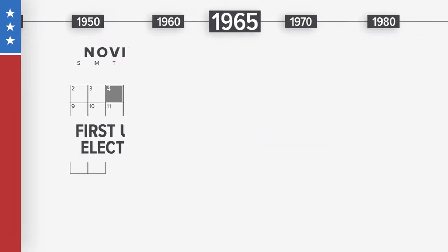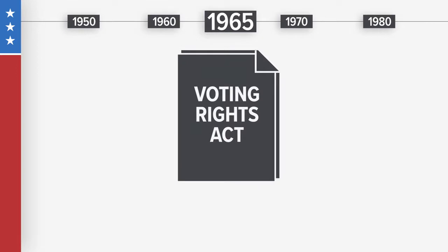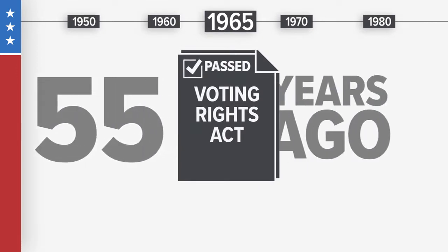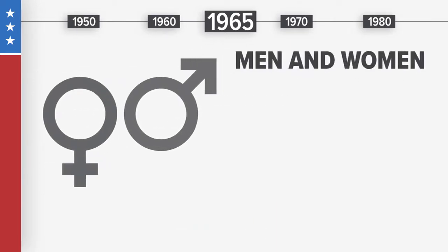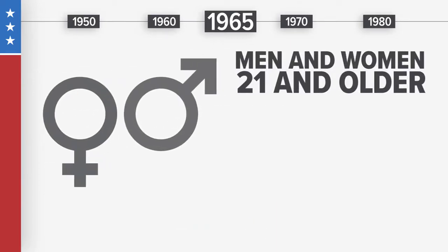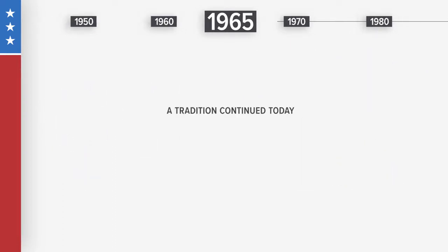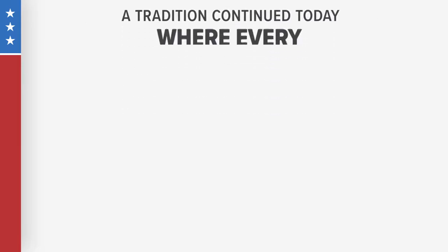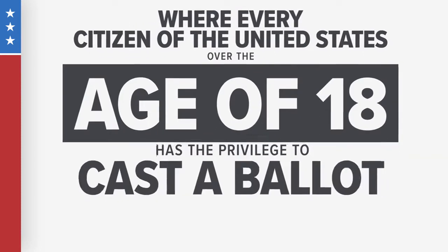Still, not all U.S. citizens were given the right to vote until 1965, when the Voting Rights Act was passed — that was just 55 years ago. The legislation ensured all men and women aged 21 and older, regardless of race, religion, or education, the right to vote without discrimination.